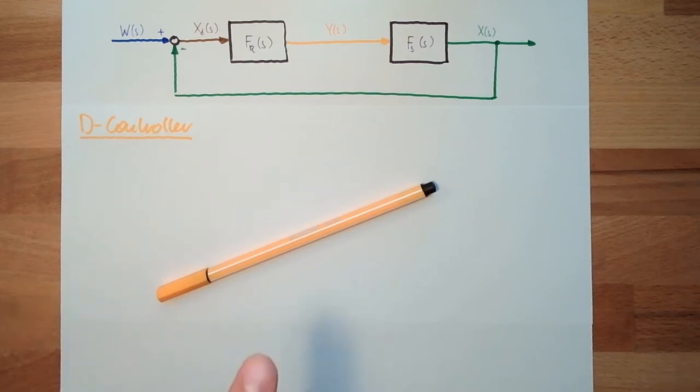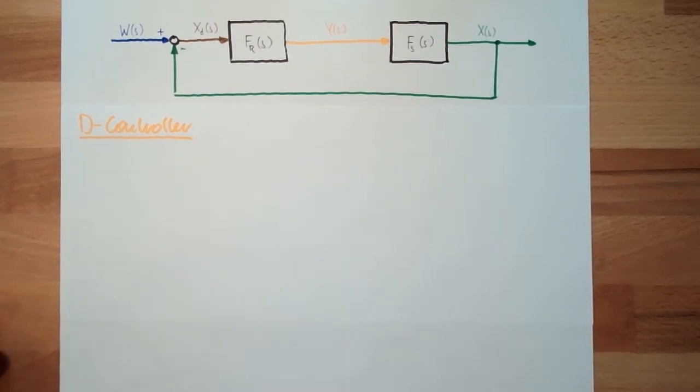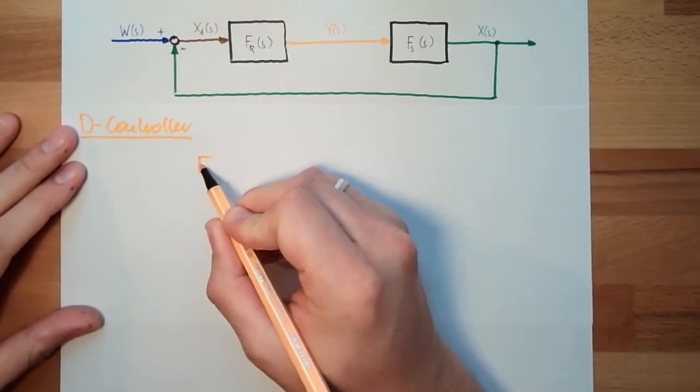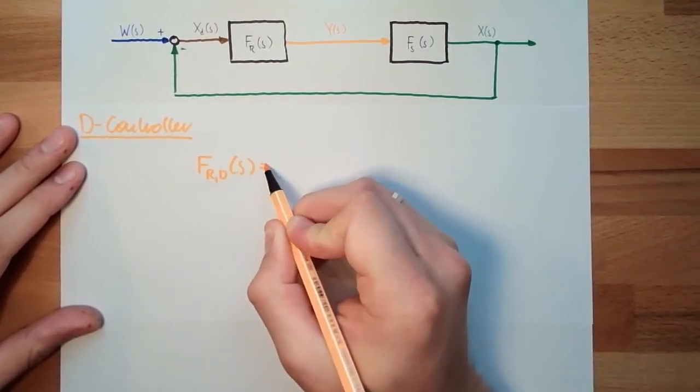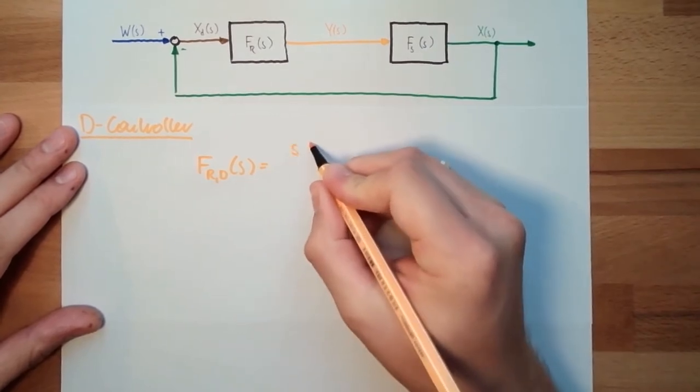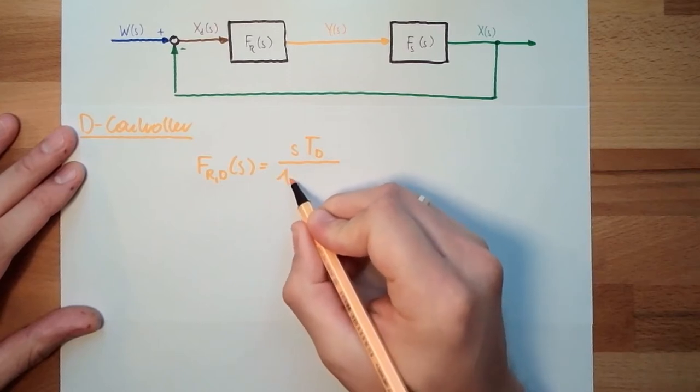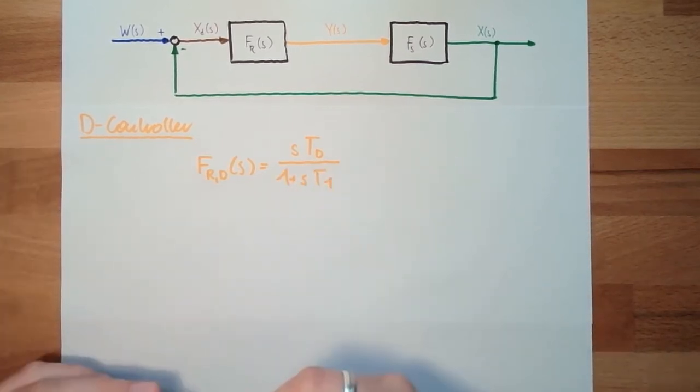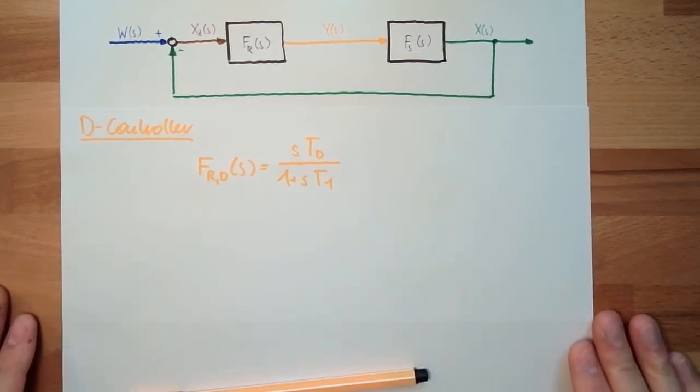I said D-elements are not existing in reality, so the transfer function of a D-controller, we are using a DT1 element. So the transfer function is sTd divided by 1 plus sT1. This was the transfer function of the DT1 element. This is the transfer function of the D-controller.